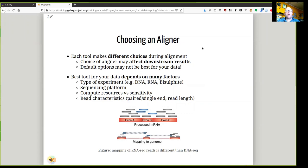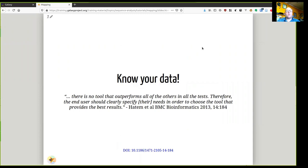Each alignment tool is going to make different choices during the alignment and this can affect your downstream results. The best tool for your data depends on many factors like the type of sequencing experiment that you've been doing, sequencing platform, your compute resources, sensitivity required, and read characteristics like paired or single ends or the read length.